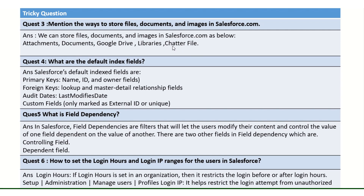The fourth question: what are the default indexed fields? This question is very popular nowadays. Salesforce default indexed fields are primary keys, foreign keys, audit fields, and custom fields. Primary keys include Name, ID, and Owner field. Foreign keys mean lookup and master-detail relationships — no other relationships. Audit fields include Last Modified Date only. Custom fields are only those marked as External ID or Unique.